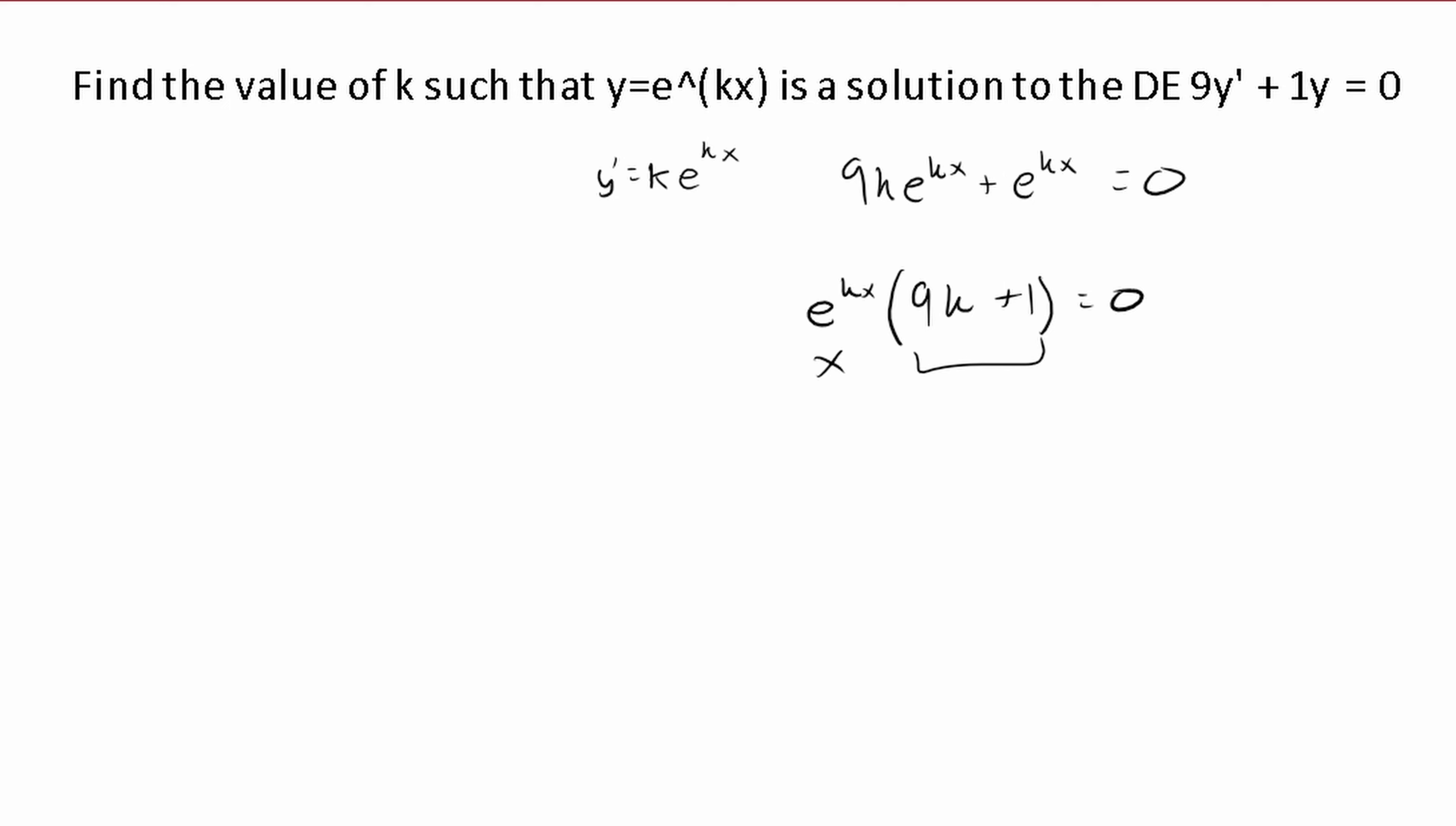The way we can do that is making 9k equal to negative 1, which means k equals negative 1 over 9. So that is how we would find the value of k for something like this.